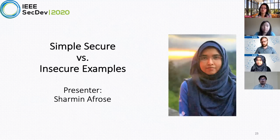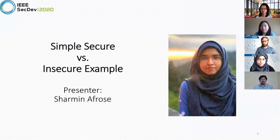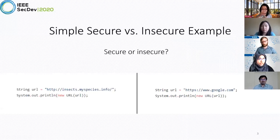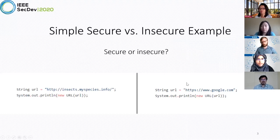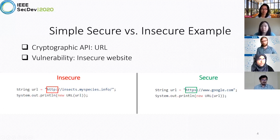Now Sharman will go through exercises to see whether you can tell secure code from insecure code, starting with very simple examples. For URL code snippets, one URL starts with HTTP and another with HTTPS. HTTP is insecure because it lacks encryption, while HTTPS is HTTP with encryption, securing the user's data.